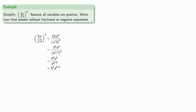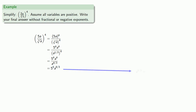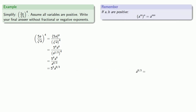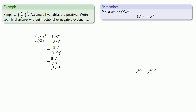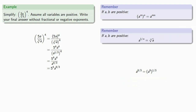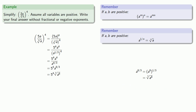We want to write the final answer without fractional or negative exponents, which means we need to handle the fraction eight-thirds. We can use the power-of-a-power rule to split that into factors eight and one-third. Since we have a fractional exponent of one-third, we read this as the cube root of a to the eighth. That allows us to write the final answer without fractional or negative exponents.